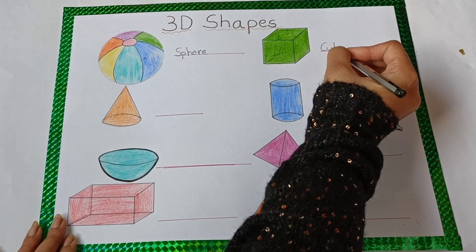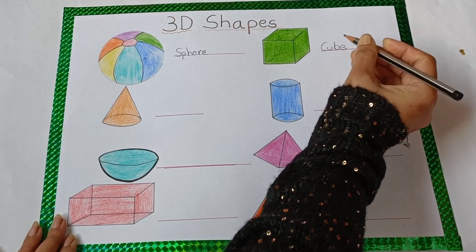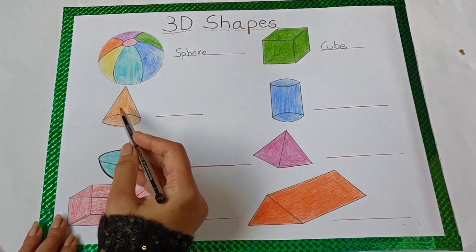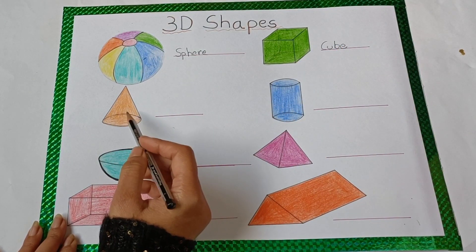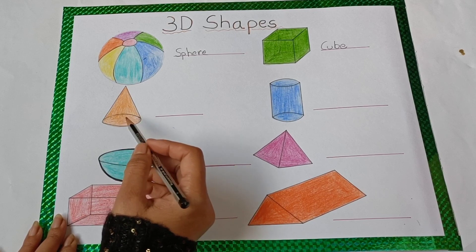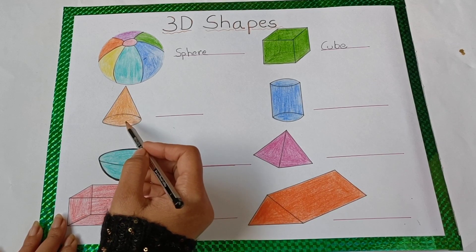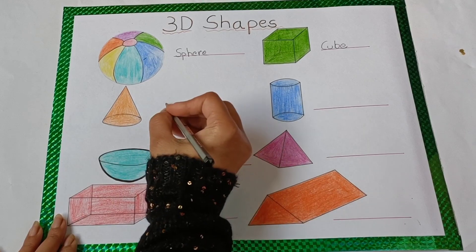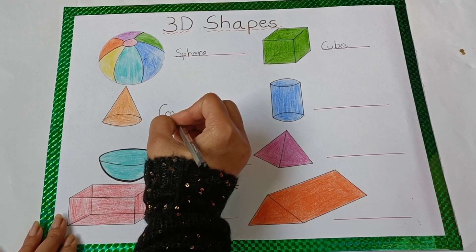C-U-B-E cube. The next shape is cone shape. This looks like an ice cream cone, right? Hence, it is known as cone shape. So right here, C-O-N-E, cone.